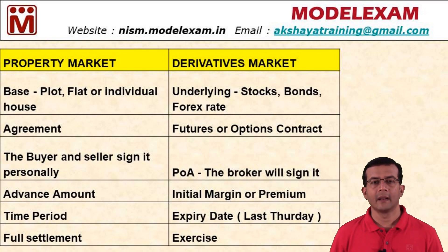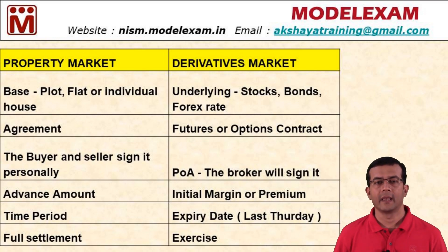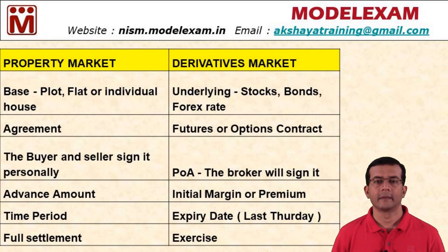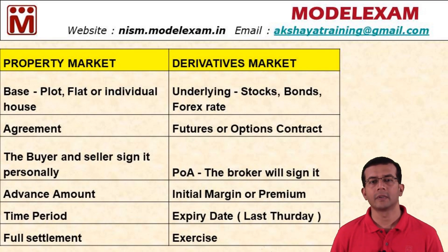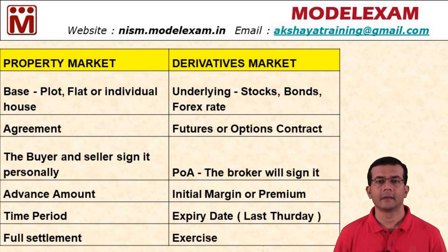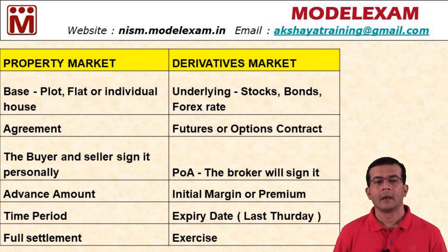The third point: under the property market, the buyer and seller personally sign the agreement on a stamped paper. But in the derivatives market, POA — power of attorney — is applicable. Whenever you buy futures or options, no trader signs on the stamp paper. Instead, the broker signs on behalf of the trader, because the trader has already given power of attorney to the broker.